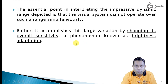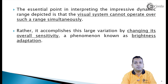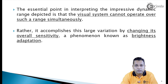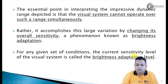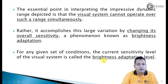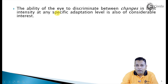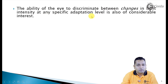Rather, it accomplishes the large variation by changing its overall sensitivity — a phenomenon called brightness adaptation. The sensitivity is governed by the receptors: cones for color vision and rods for the overall description of the image. Because overall sensitivity has a changing nature, we have the phenomenon of brightness adaptation. For any given set of conditions, the current sensitivity level of the visual system is called the brightness adaptation level.